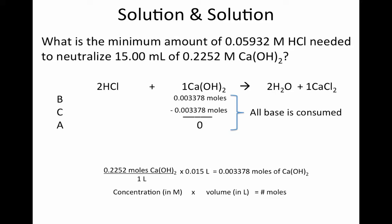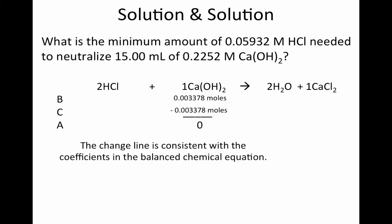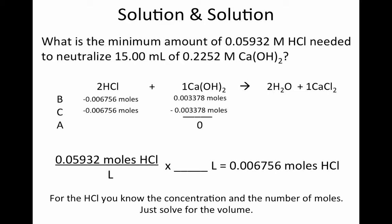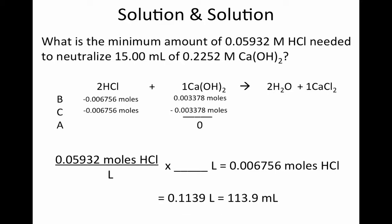How much HCl did we need in order to consume it? The change line is consistent with the coefficients in the balanced chemical equation: 2 moles of HCl react with every 1 mole of calcium hydroxide. We use a simple proportion to determine how many moles of HCl reacted when 0.003378 moles of calcium hydroxide react, giving us the change line for HCl. Therefore, we needed 0.006756 moles of HCl to neutralize all the calcium hydroxide. The concentration of HCl is given, so we solve for the volume in liters, which can also be expressed in milliliters.